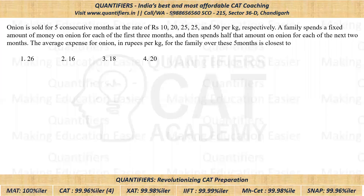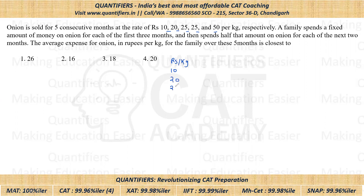Now let us come to the question. I hope all of you have tried it — it was a very easy question. Onion is sold for five consecutive months at the rate of 10, 20, 25, 25, and 50 rupees per kg. So let me write the prices: 10 rupees per kg, 20 rupees per kg, 25 rupees per kg, 25 rupees per kg, and 50 rupees per kg.